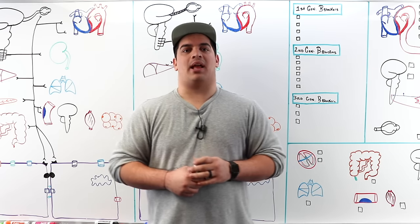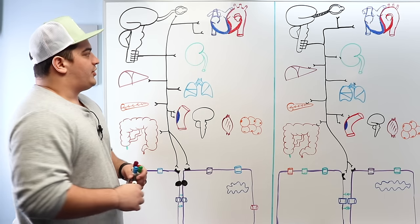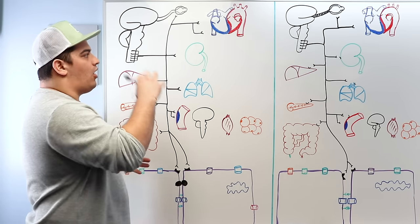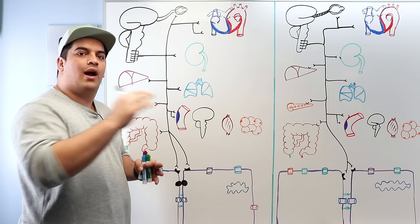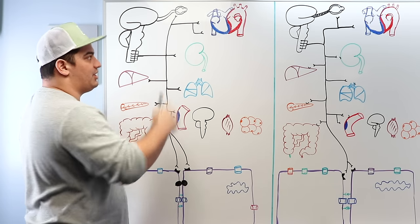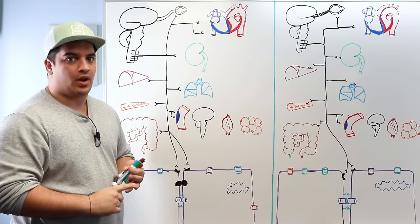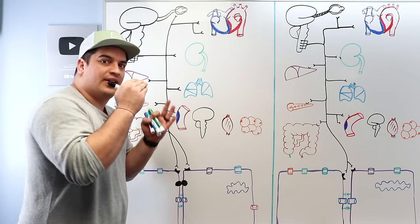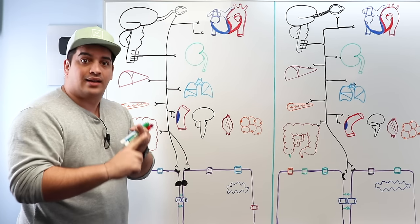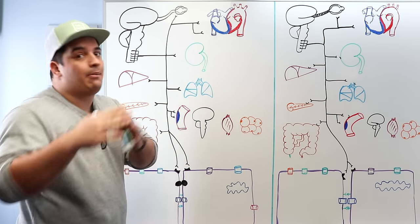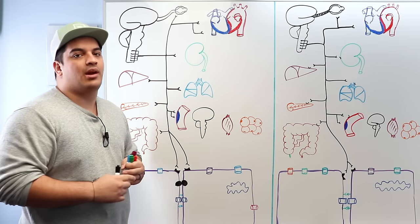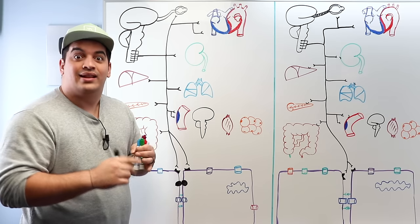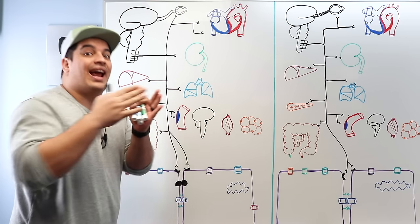Hi Ninja Nerds, in this video we're going to talk about beta blockers. Before we start, I really want us to understand the basic autonomic nervous system physiology, primarily focusing on the beta receptors — beta-1 and beta-2 — because a lot of the beta blockers we'll discuss are either selective for beta-1, non-selective for beta-1 and beta-2, or third generation like labetalol and carvedilol that can bind to alpha and beta receptors.